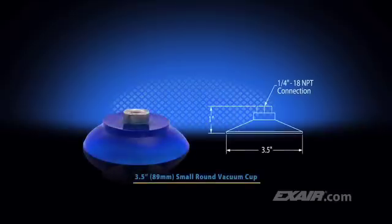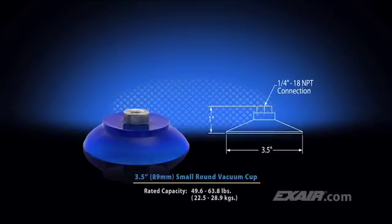For this application, we're using a 3.5 inch or 89 millimeter small round vacuum cup, which has the rated capacity of 49.6 to 63.8 pounds. This is 22.5 to 28.9 kilograms. It can easily handle the weight of the 19.1 pound box.